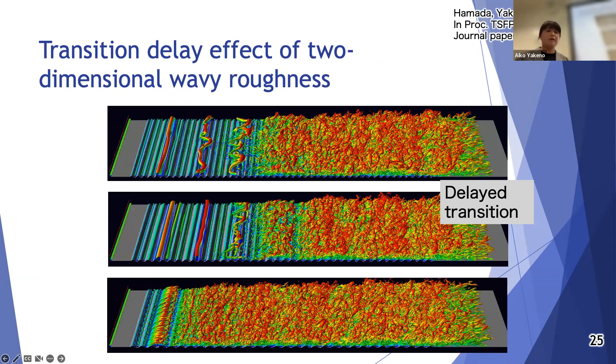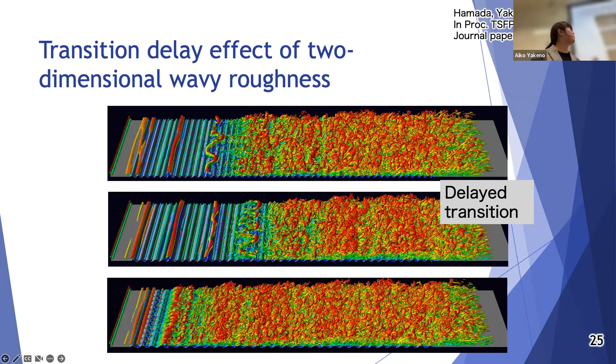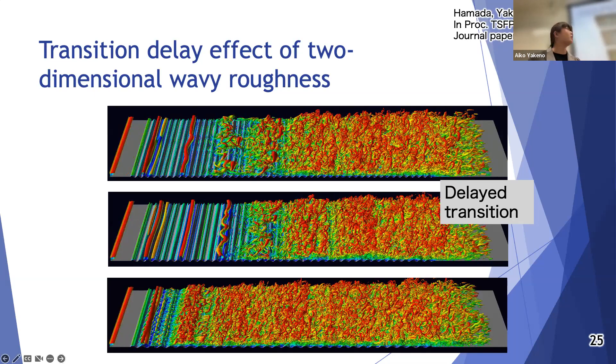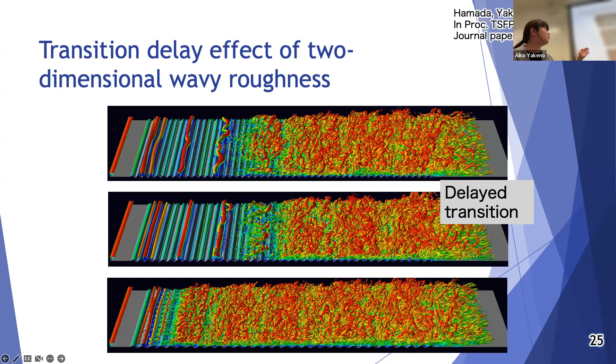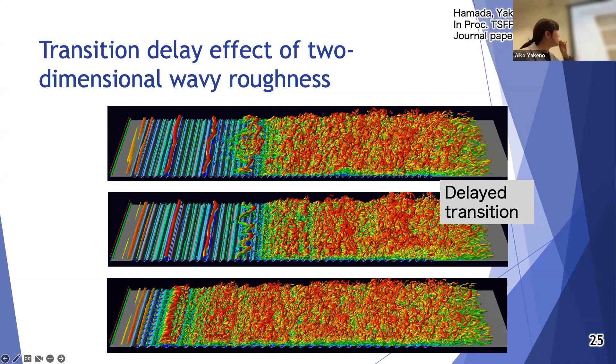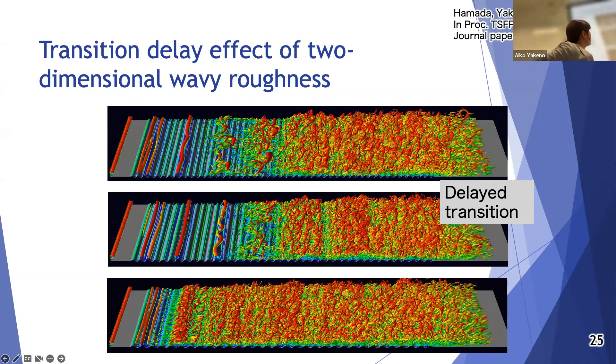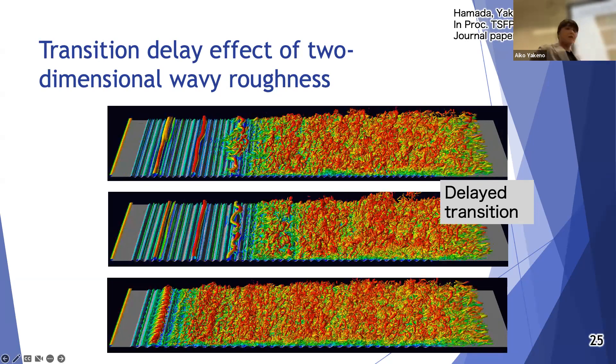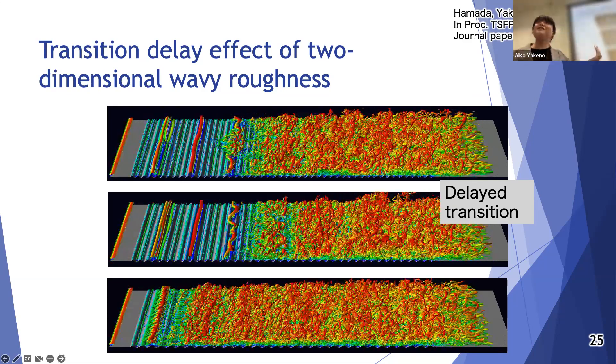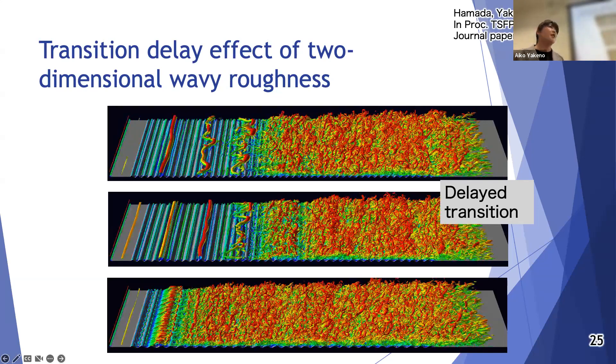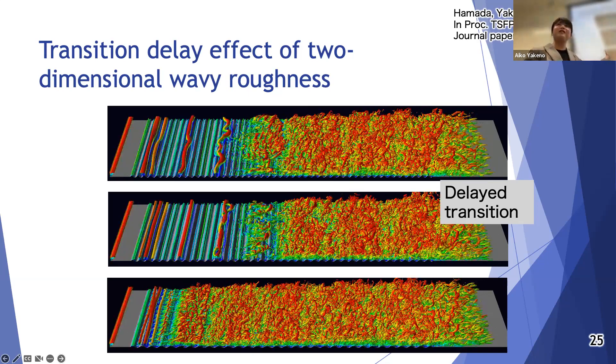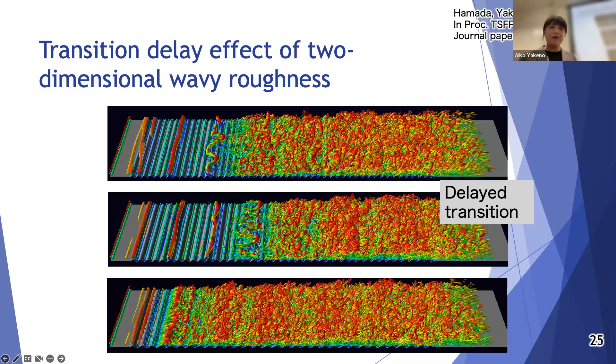Additionally I am also doing some numerical simulation on a transition delay effect. This is investigation of the two-dimensional wavy surface on the transition. As you see, among these wavelengths, some wavelengths delay transition like this. Now in this two-dimensional wavy surface, compared to the smooth surface, it generates drag more than the smooth surface.